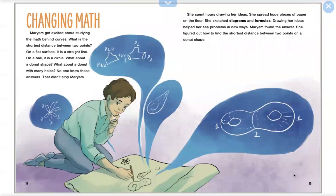Changing Math. Maryam got excited about studying the math behind curves. What is the shortest distance between two points? On a flat surface, it is a straight line. On a ball, it is a circle. What about a donut shape? What about a donut with many holes? No one knew these answers. That didn't stop Maryam.